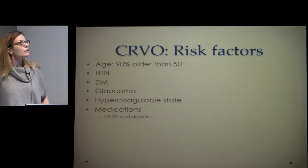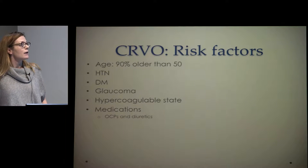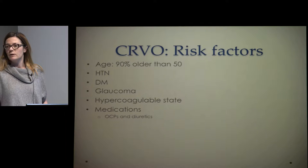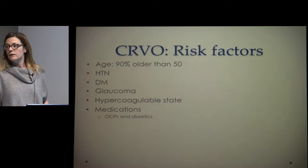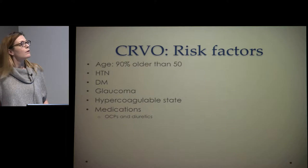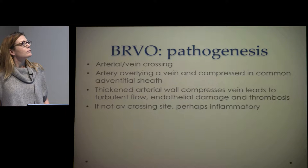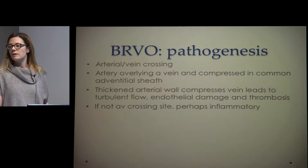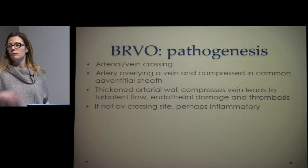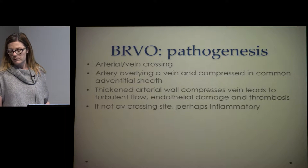The biggest risk factors for central vein occlusion are age, hypertension, diabetes, and glaucoma. If none of those are present, we need to consider a hypercoagulable state and consider a workup, and also look at their medication list. You can often see these in younger women on oral contraceptives. We'll talk about central and branch vein occlusions and then discuss the studies and treatments together, since a lot of them overlap.